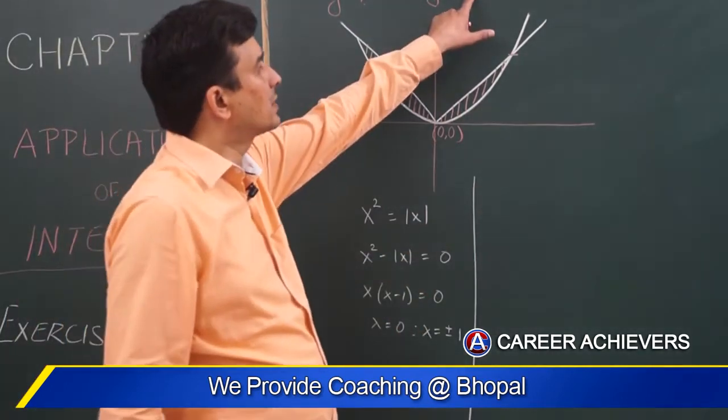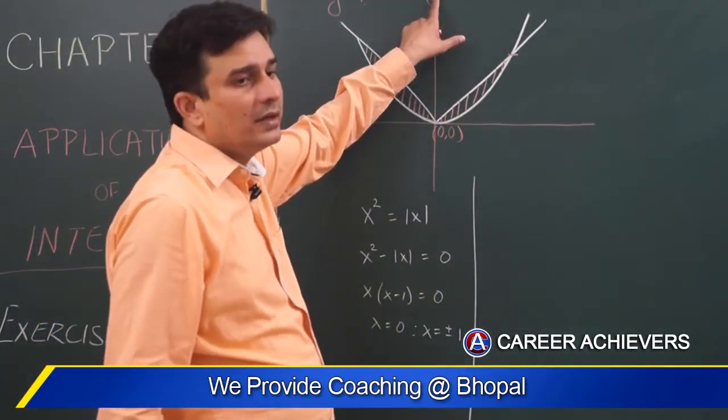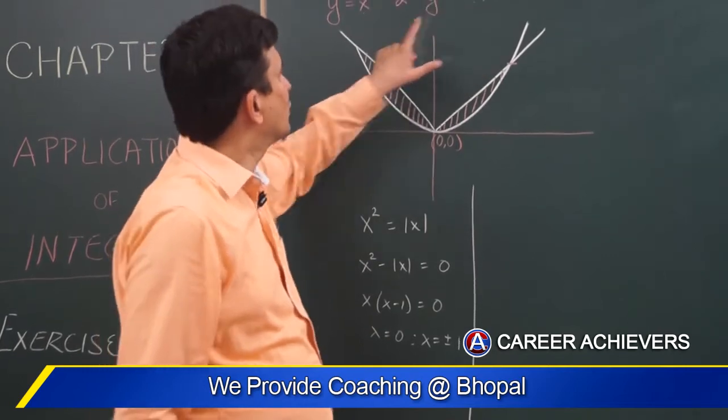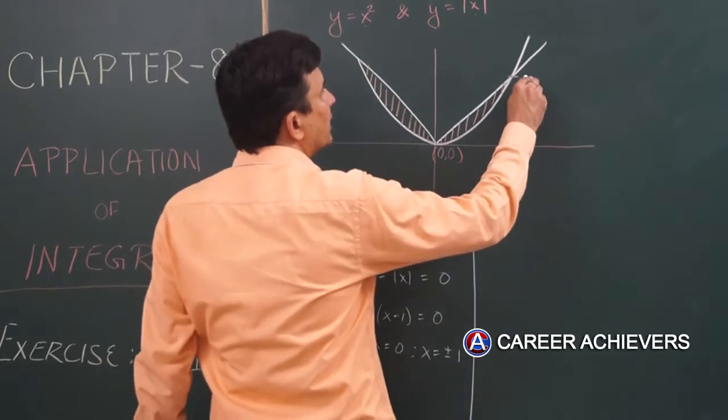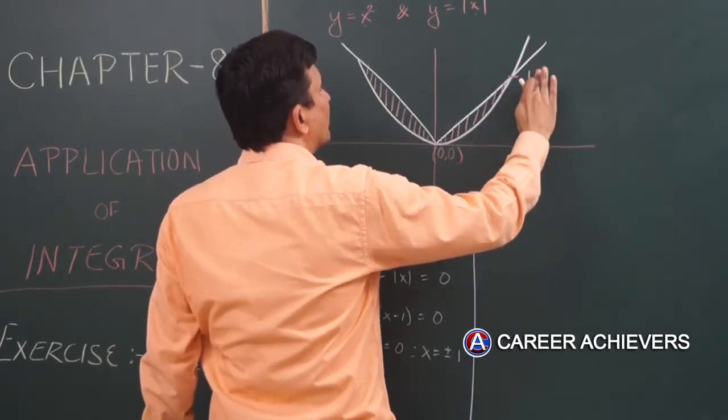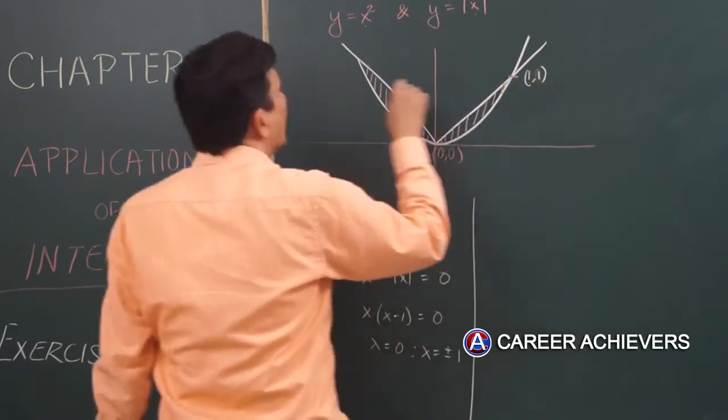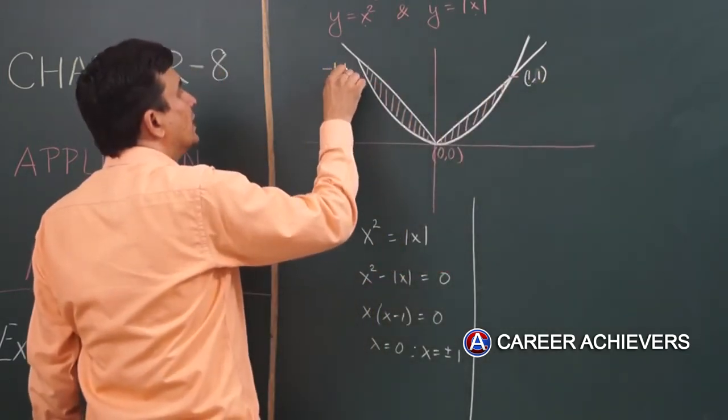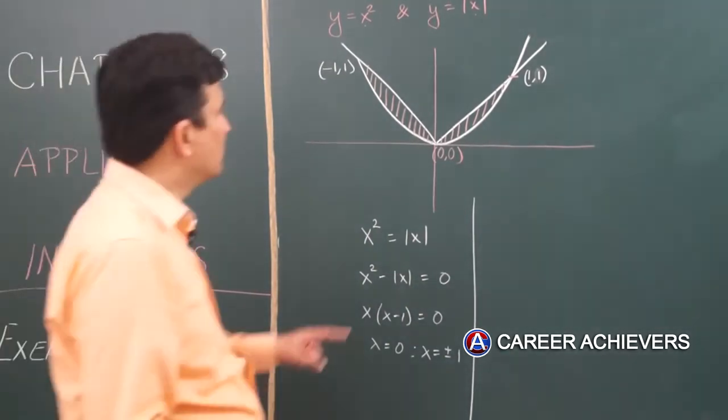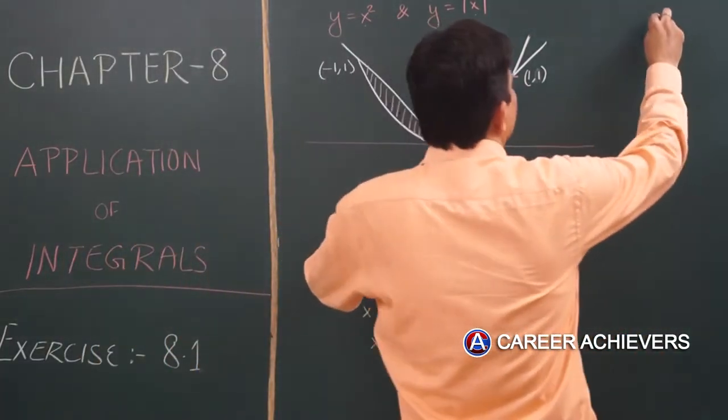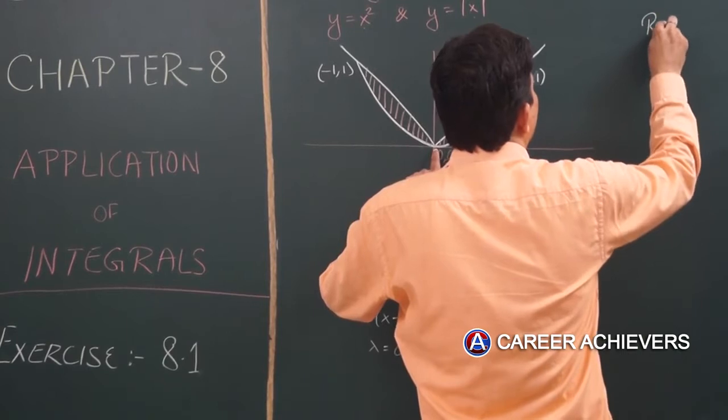y equals mod of x, jab x positive to y positive, jab x negative to y positive dono hi case mein. One zero, sorry one one, or minus one one. Required area.